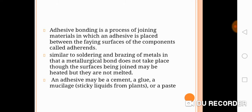Adhesive bonding is a process of joining materials in which an adhesive is placed between the faying surfaces of the components, called adherends. This process means joining two materials using an adherent that holds the materials together. Importantly, in this case the metallurgical bond does not take place at the surfaces being joined. The adherent may be a cement, glue, or paste — many commercial forms of adhesives are available.